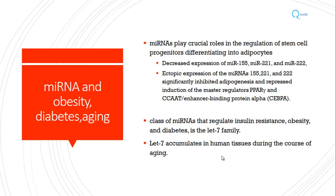Interestingly, miRNA is also associated with obesity, diabetes, and aging. miRNA plays a crucial role in the regulation of stem cell differentiation into fat cells or adipocytes. Certain miRNAs are decreased — like miR-155, miR-221, and miR-222 — while others are increased, and this can lead to obesity. This also gives positive ideas for treating obesity by gene therapy. Certain micro RNAs also regulate insulin resistance in diabetes, and the let-7 family accumulates in human tissue during aging — making miRNA a target for anti-aging therapy and treatment of type 2 diabetes.